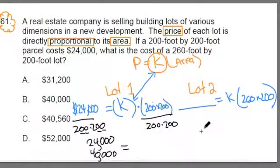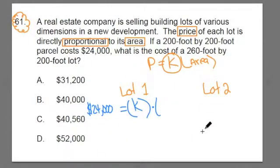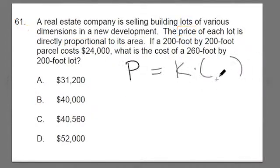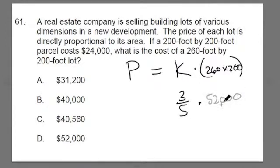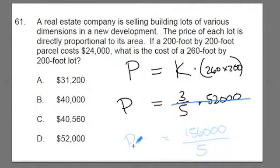Let me clear off the screen here. We have a little bit more space to do some of these calculations. The area in this case is 260 times 200. Our constant we just did is 3 fifths. What's 260 times 200? Well, 2 times 26 is 52 plus 3 zeros is equal to the price of the second lot. You can do this any way you want to, as long as you're really careful. So I like to say, 3 times 52 gets you 156 plus the three zeros, 156,000 divided by 5 equals the price of the second lot.